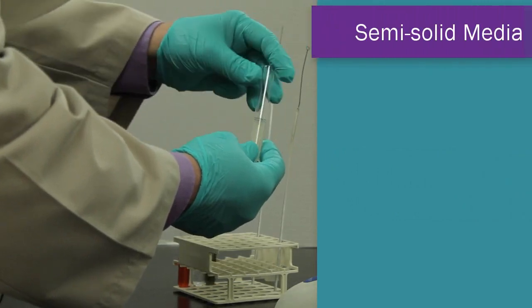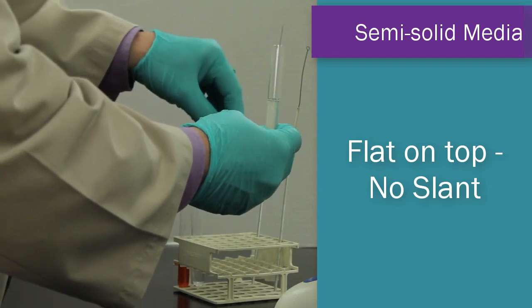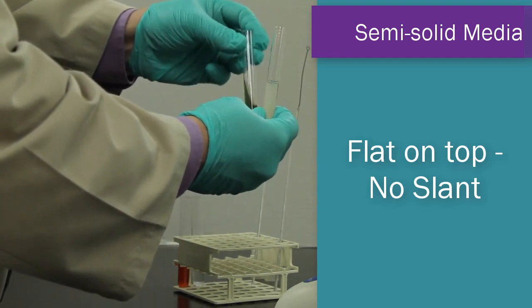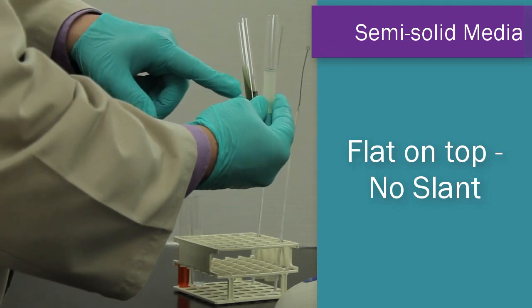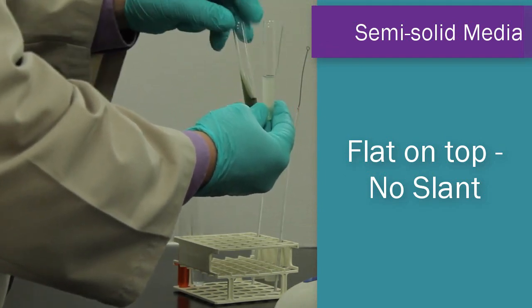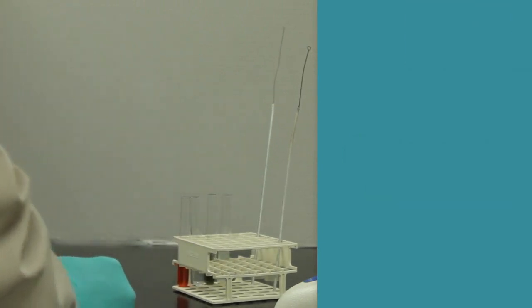The next type of media that you'll be using is a semi-solid. Semi-solid can be identified or distinguished from the solid media because the semi-solid is just flat on top, whereas the solid media has the agar slant. So those are the three types of media you could be using in the microbiology lab.